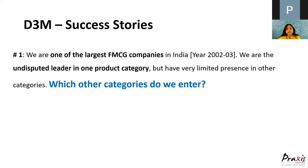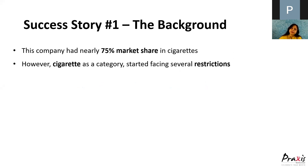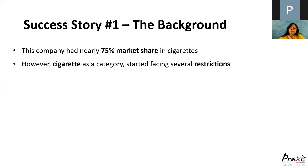They were thinking that only one product is not good for a company because diversification can reduce risk. They had 75% market share in cigarette, but they were starting to face different restrictions on cigarette sales — they couldn't advertise, had to put negative health pictures on packs, and every budget increased cigarette prices, risking lower demand.